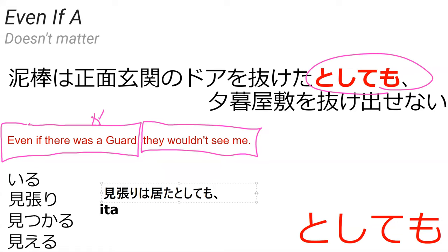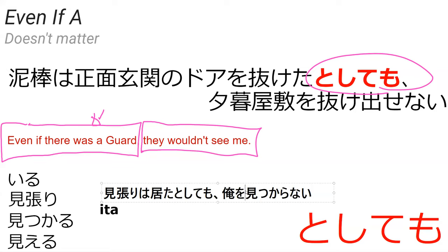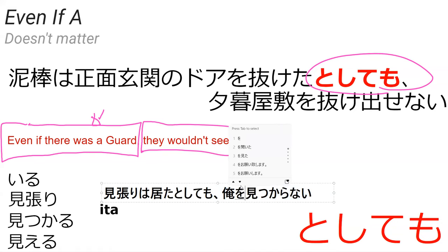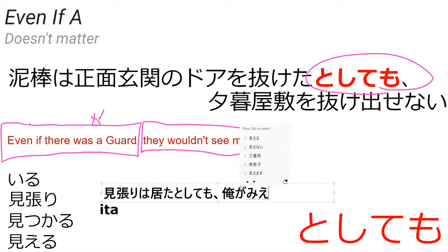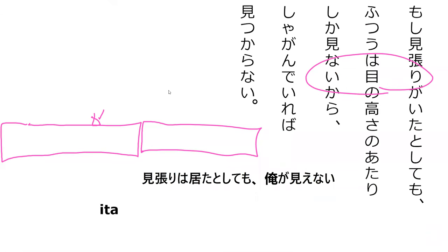They wouldn't see me — how are you going to say that? Ore ga mitsukaranai. So mitsukaru gives us 'I will not be found.' Versus if you don't want them to see you, that'd be mitsukenai. You can also say ore ga mienai — literally 'they will not be able to see me,' because miyeru is 'to be able to see' and mienai is 'not being able to see.' Let's go read the line from the book.